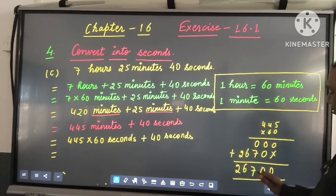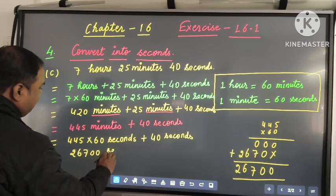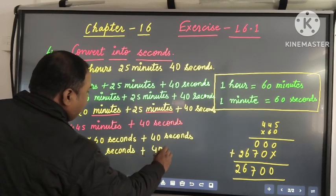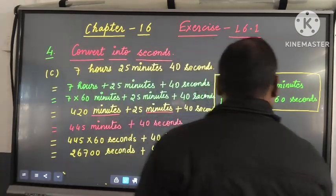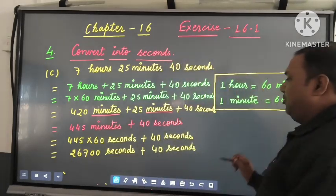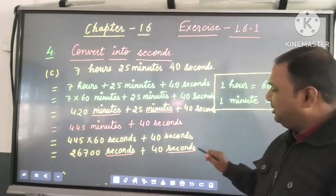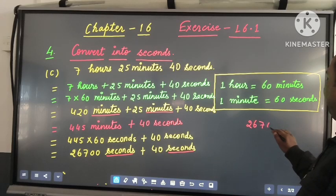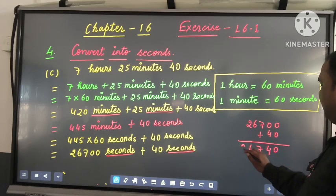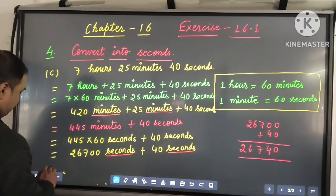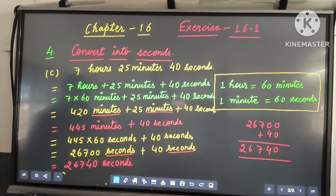When you add up the multiplication, you will have 26,700. So we write 26,700 seconds plus 40 seconds. Now you can see 26,700 is in seconds and 40 is also in seconds, so we add them: 26,700 plus 40 equals 26,740 seconds. This is the answer for Question number 4c.